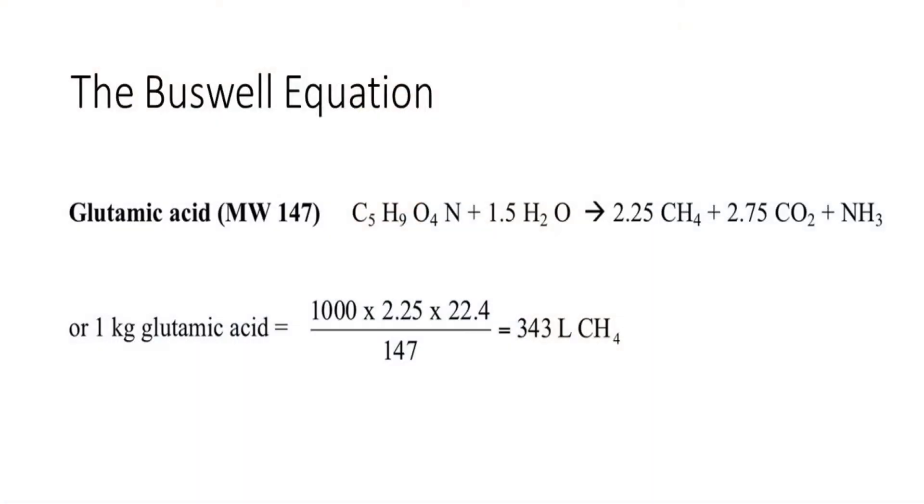We can do now the same with our glutamic acid. Glutamic acid, we fill in again in the Buswell equation these parameters. So one glutamic acid, one mole, reacts with a mole and a half of water to give you 2.25 mole of methane, 2.75 mole of CO2 and we release also an ammonia. This means that the kilogram of glutamic acid, again a thousand grams, divided by its molar mass, 147 grams per mole, times 2.25 moles of methane per moles of glutamic acid, times 22.4, we make a bit less, 343 liters of methane per kilogram of glutamic acid that we convert.